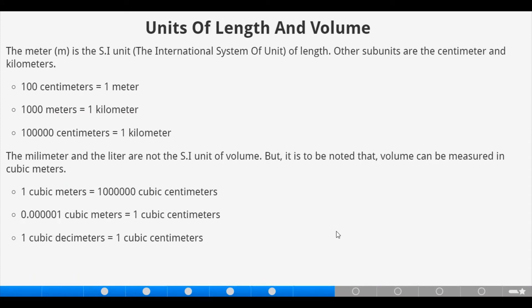Now, units of length and volume. The meter is the SI unit, that is the International System of Unit of Length. Other subunits are the centimeters and kilometers. Let's see how they relate. One hundred centimeters is equivalent to one meter. One thousand meters is equivalent to one kilometer. One hundred thousand centimeters is equal to one kilometer. The millimeter and the liter are not the SI unit of volume. But it is to be noted that the volume are measured in cubic meters. One cubic meter is equal to one million cubic centimeters.